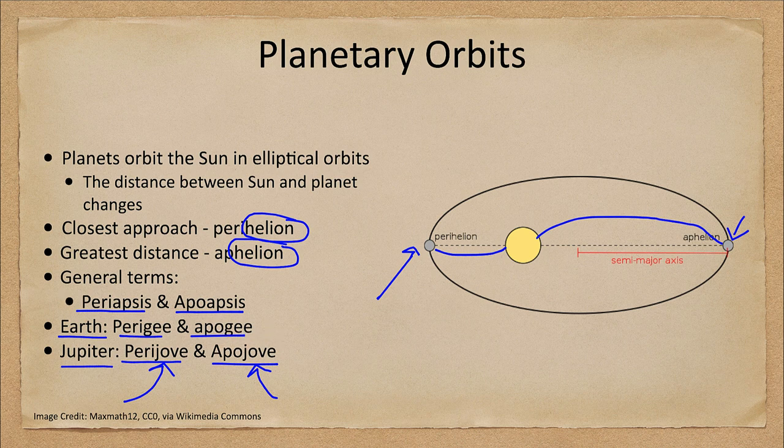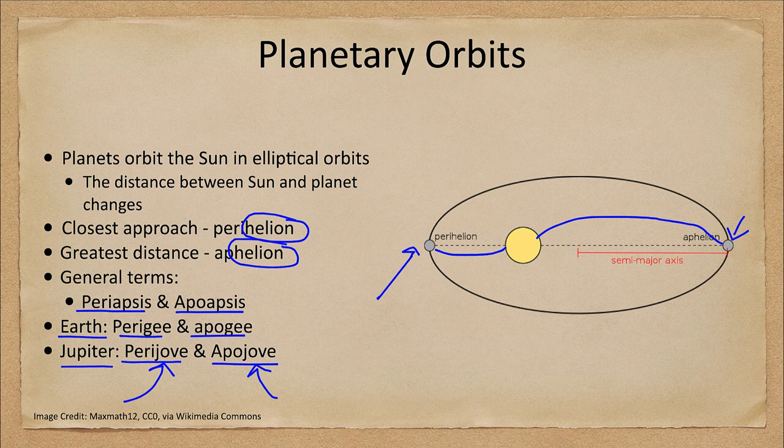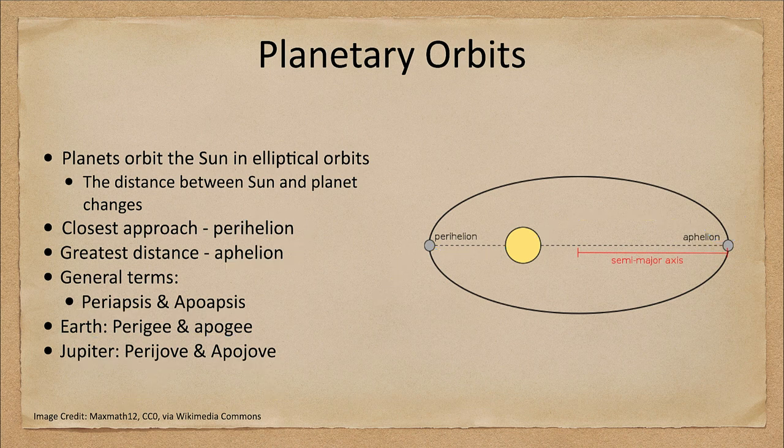So really, the two terms are related to the closest and furthest distances of a planet from the sun, although they can be generalized to talk about orbits around any other object as well.